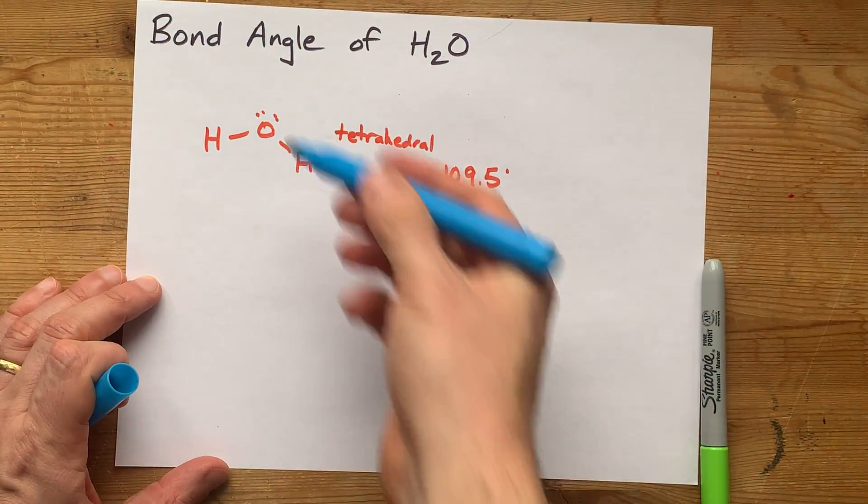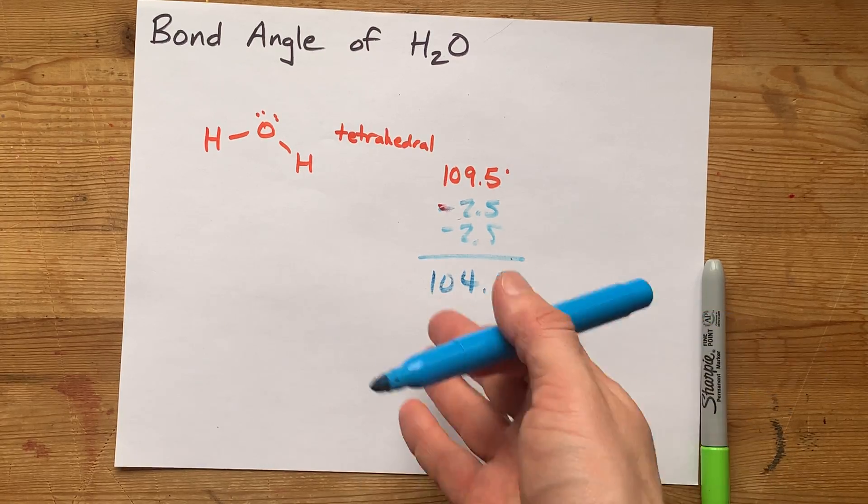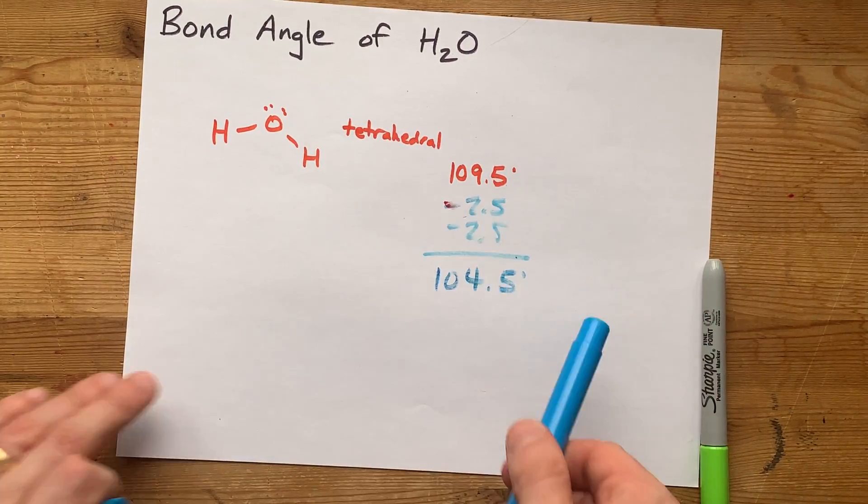Generally, when a teacher's asking for the bond angle of water, they'll accept anything from 103 up to 107, just not 109.5 exactly.